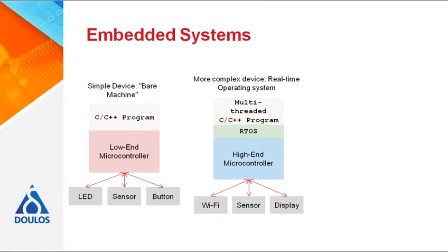In a more complex device, the operating system provides a layer between the hardware and the application, which in some ways makes it easier to program the application as it doesn't need to know the low-level details of the hardware to be able to run on it. On this more complex device, the program will define a number of different tasks or threads which deal with different parts of the system. Most RTOSs also provide code to drive more complex peripherals like touchscreens or to access the internet via a Wi-Fi connection. The real-time in real-time operating system describes the ability of an RTOS to react to an event within a certain predictable amount of time.